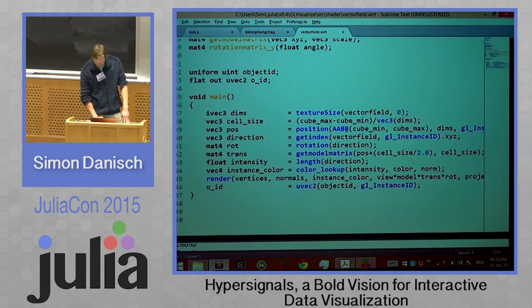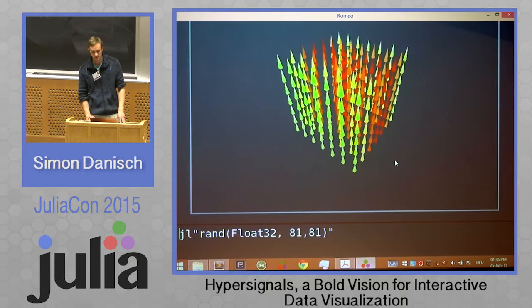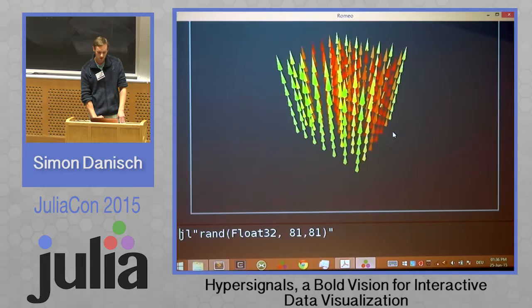I can just edit the shader and update it. So now I took out the rotation matrix, so all the rotation is gone. This is a really nice way if you're developing OpenGL code — you get nice access to how to do visualizations on the GPU.